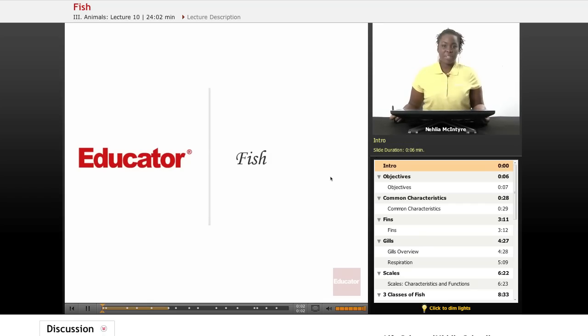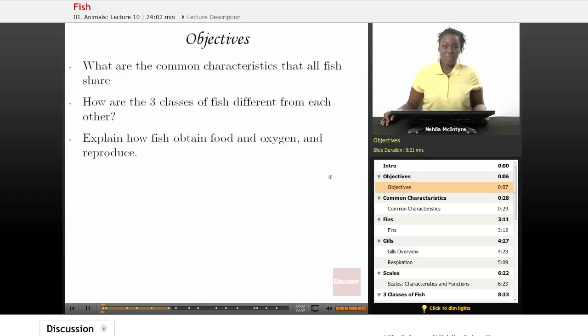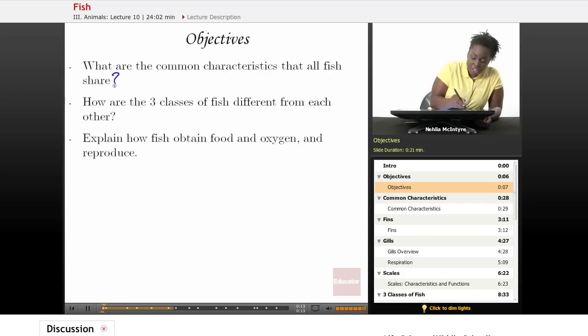Welcome back to Educator.com. This is the Life Science course, and today's lesson is on fish. Our three objectives for today will be: what are the common characteristics that all fish share? Number two, how are the three classes of fish different from each other? And number three, explain how fish obtain food and oxygen and how they reproduce.